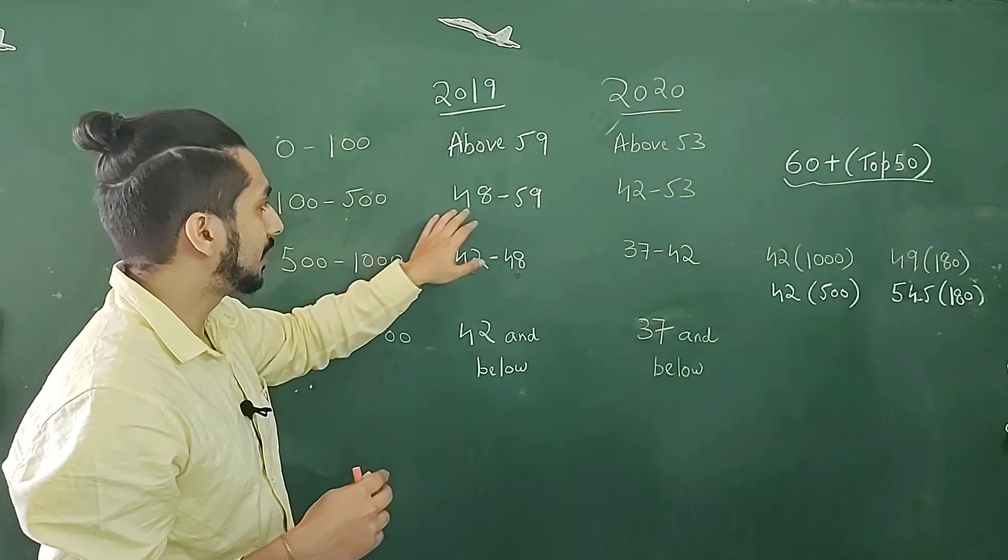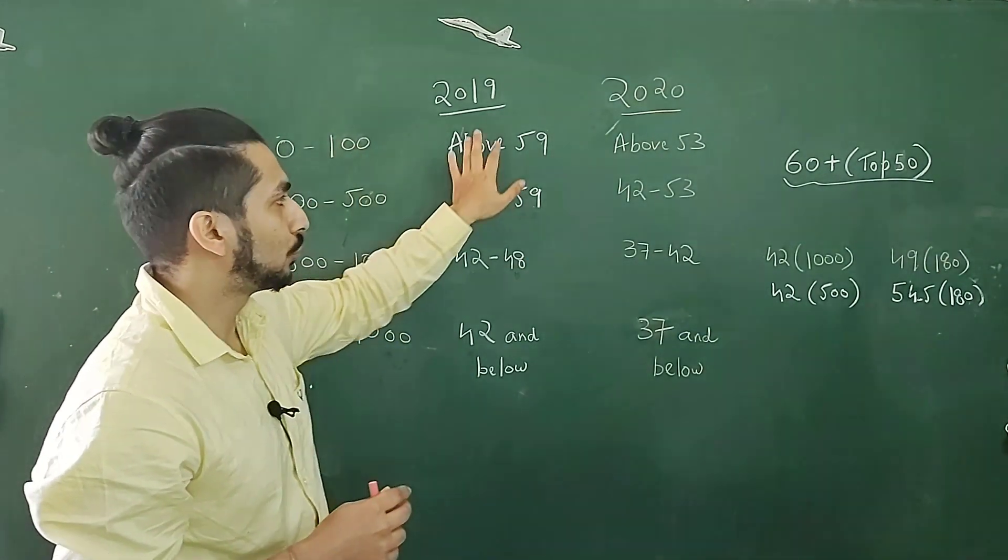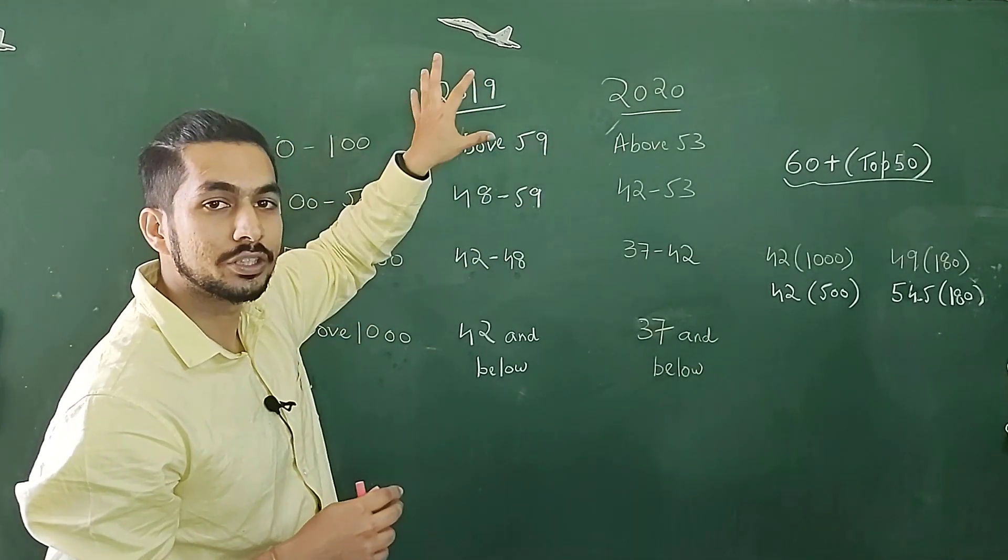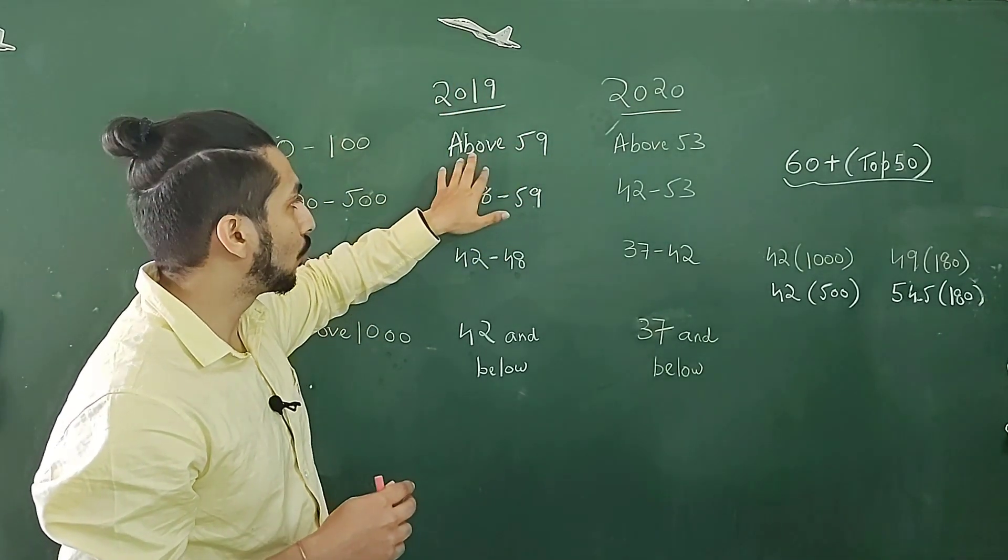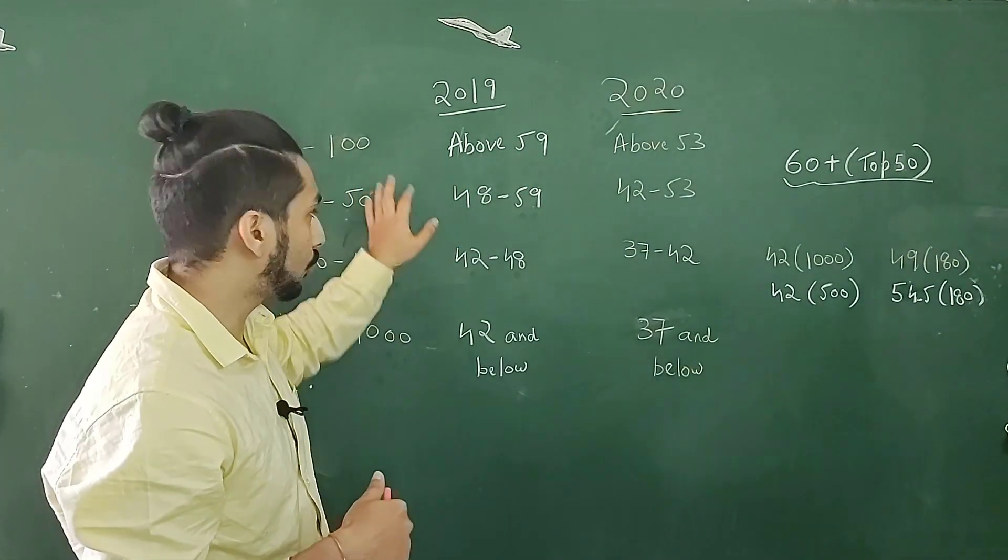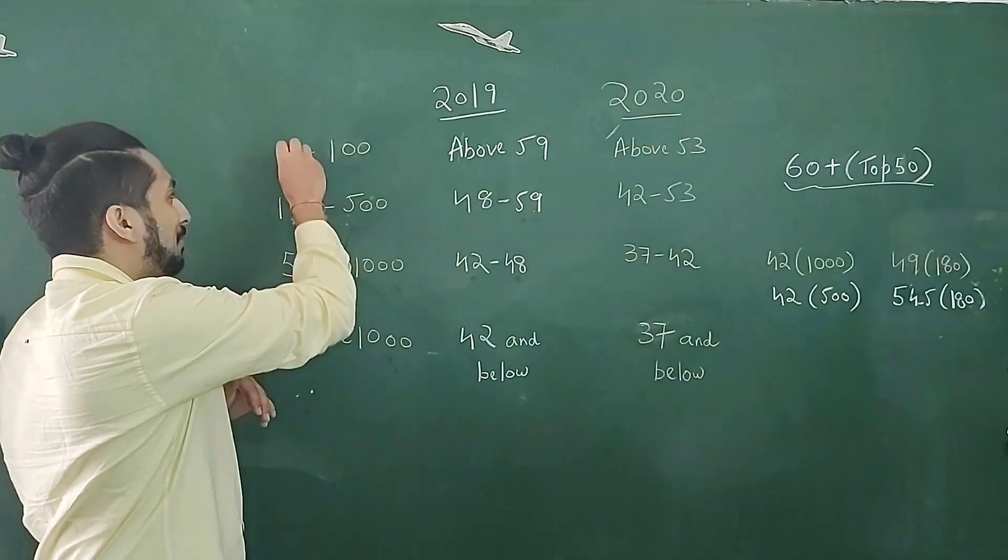For 100 to 500, it is 48 to 59 and for 0 to 100, that is top 100, you have to aim for above 59. This is a safer side, because 2019 was a year with the highest cutoff. So if you are scoring above 59, you would have got definitely a rank between 1 to 100.